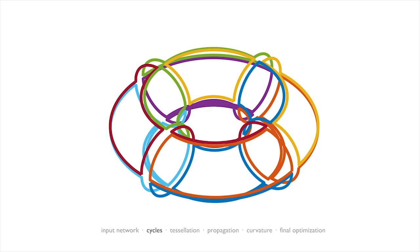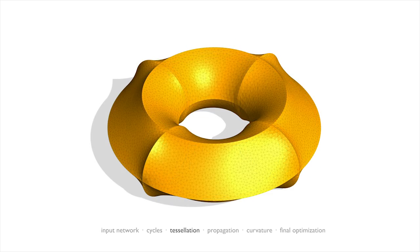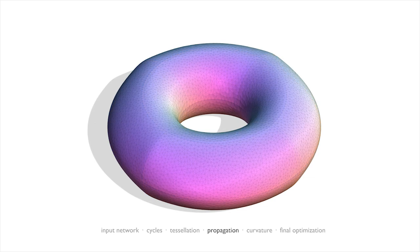we first detect and tessellate the individual cycles. We then propagate the normals from the curves to the whole mesh and use them to estimate the mean curvature which guides the final optimization.